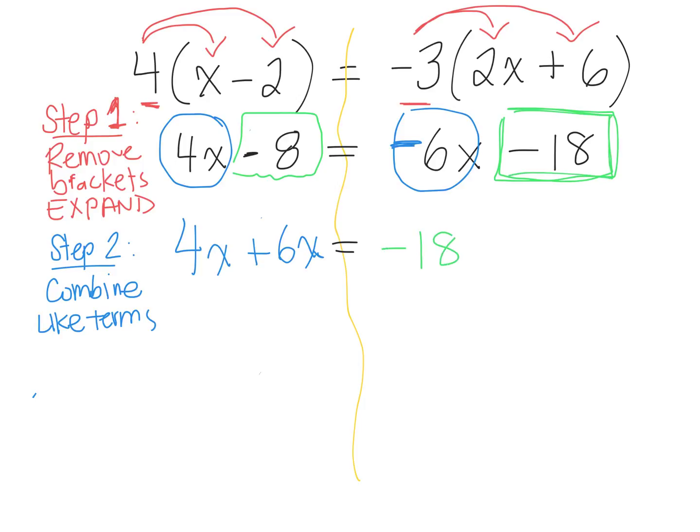I'm going to keep negative 18 there. I'm not doing anything with that. But in order to bring negative 8 to combine it with negative 18, how do I get rid of negative 8 from the left side? Plus 8. If I add 8, I'm getting rid of it from the left side. What do I have to do to the right side? Plus 8. We combine them.